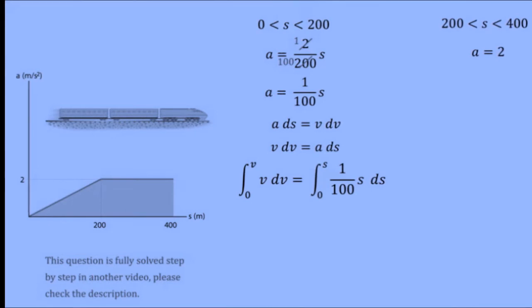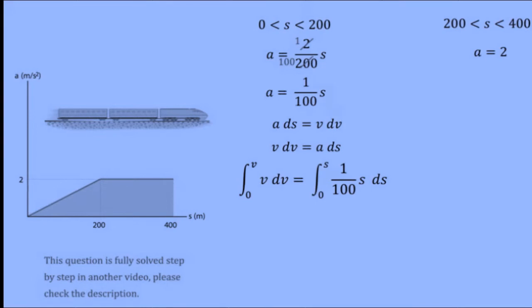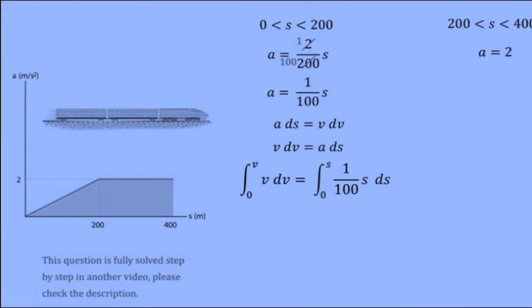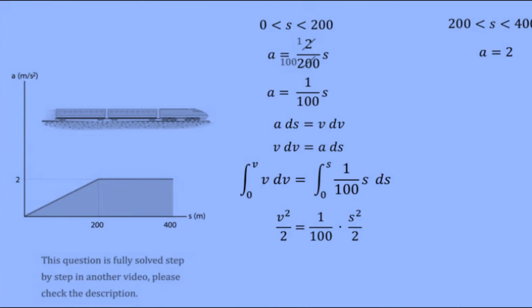Remember that the lower bounds are zero because the train starts at a displacement of zero meters and the velocity is zero at s equals zero. This is usually given to us in the equation. Solve the integral now.